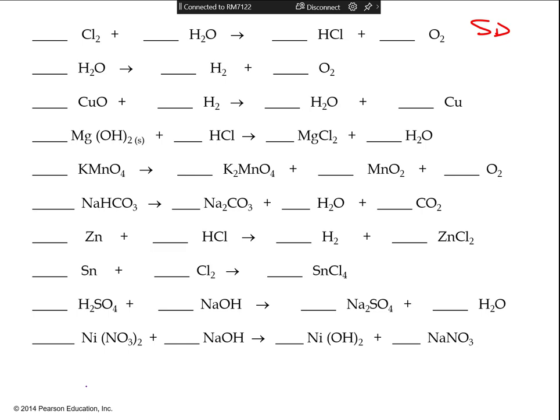The second one is decomposition — notice that I have one reactant and two products, so think of things splitting. The third one is another single displacement: two reactants, two products, one element and one compound on each side. The fourth one also has two reactants and two products, but it's a double displacement — both reactants are compounds, like MgOH₂ and HCl, so they're swapping two partners.